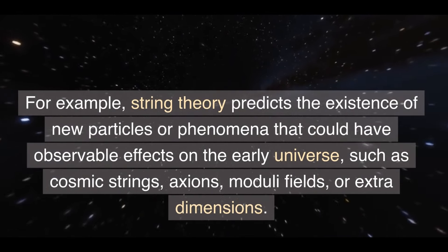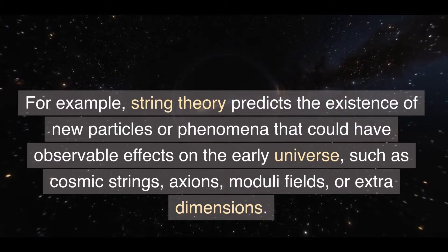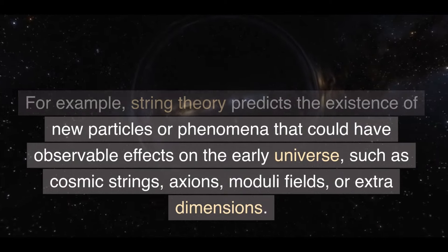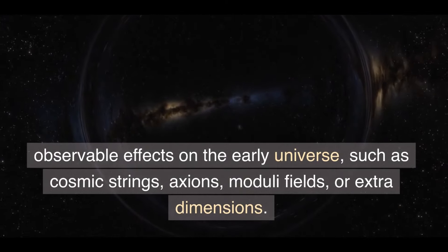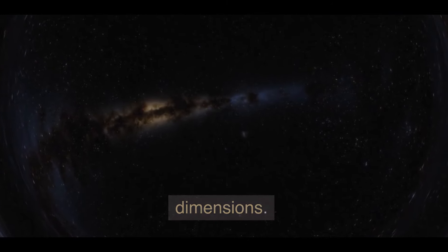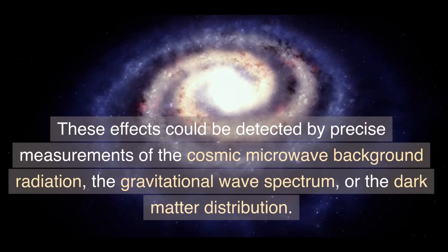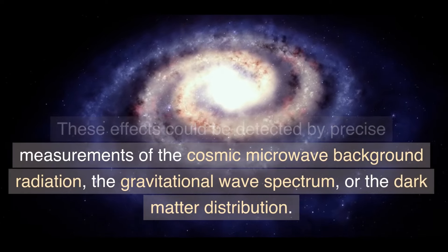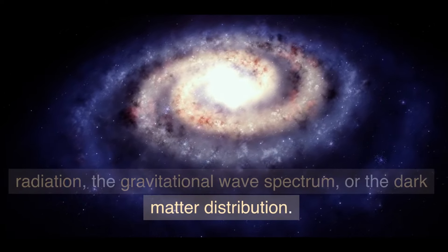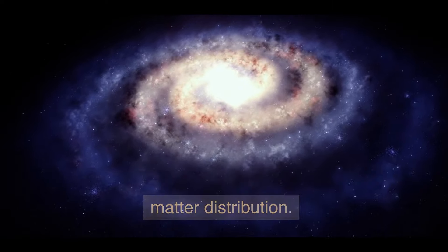For example, string theory predicts the existence of new particles or phenomena that could have observable effects on the early universe, such as cosmic strings, axions, moduli fields, or extra dimensions. These effects could be detected by precise measurements of the cosmic microwave background radiation, the gravitational wave spectrum, or the dark matter distribution.